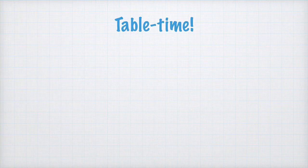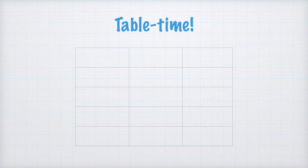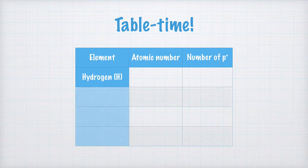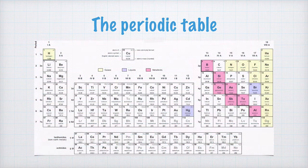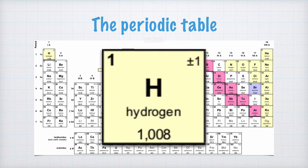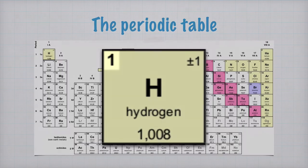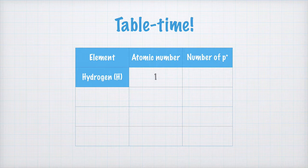Let's make a small table to reinforce how atomic number and number of protons are connected. In the table head, we write element, atomic number and number of protons. The first element we look at is hydrogen. To find its atomic number, we check the periodic table. We find hydrogen up here to the left. In this periodic table, the atomic number is up here to the left. The atomic number for hydrogen is 1, which we fill in our table. Since it equals the atomic number, there is 1 proton in a hydrogen atom.